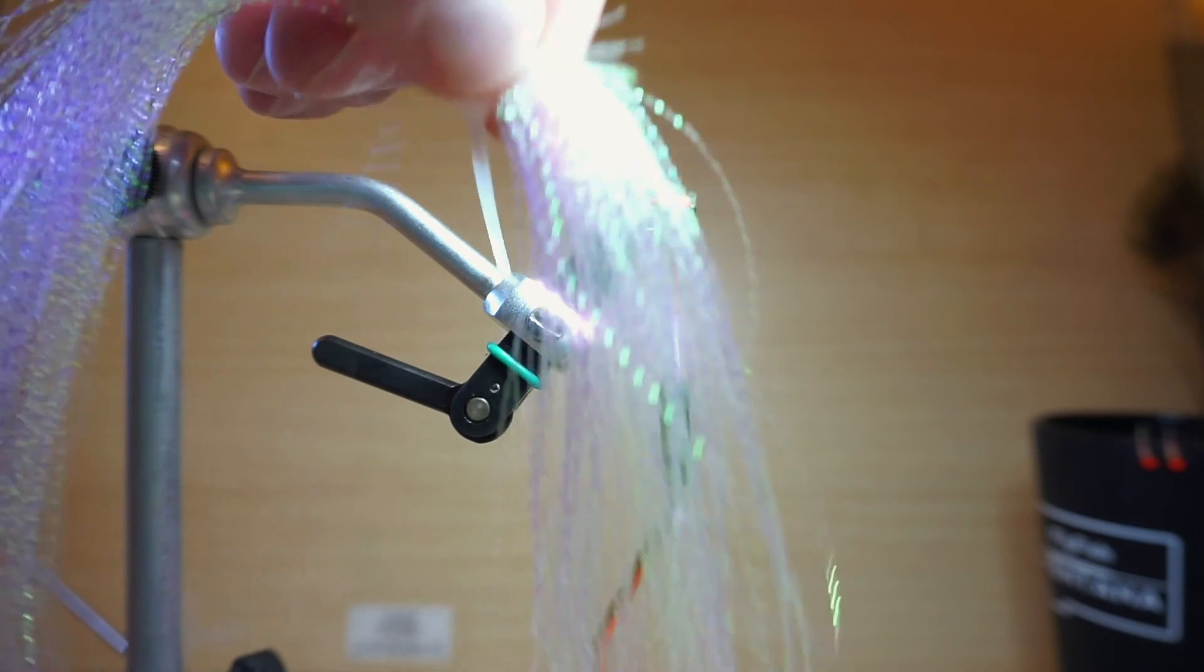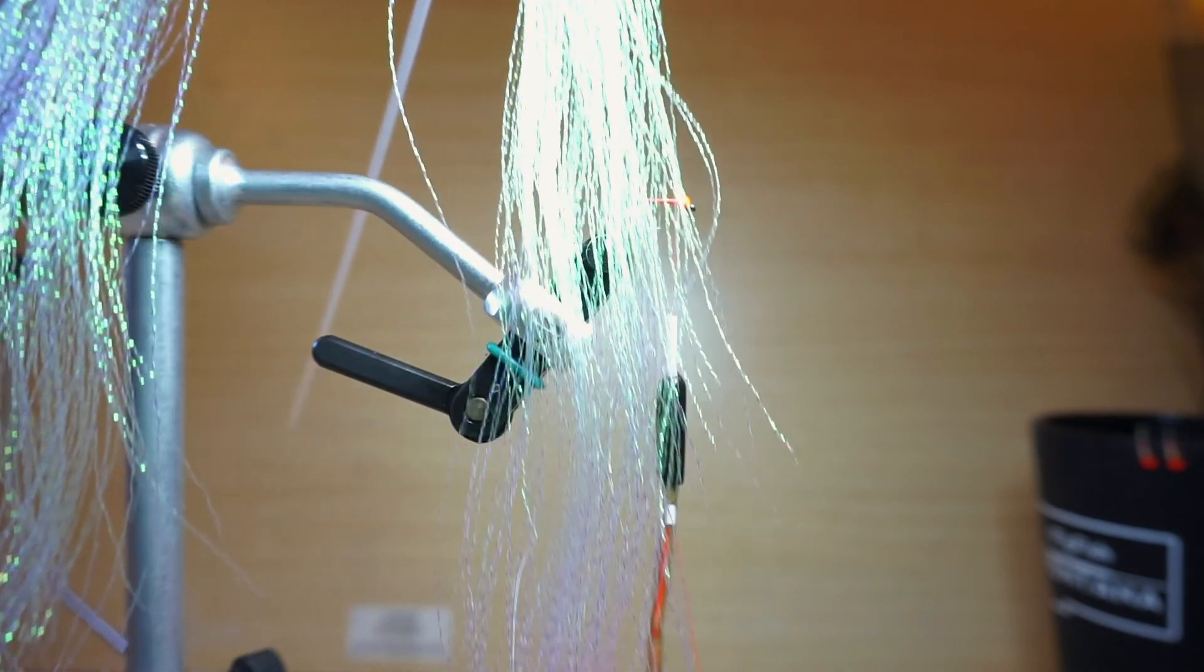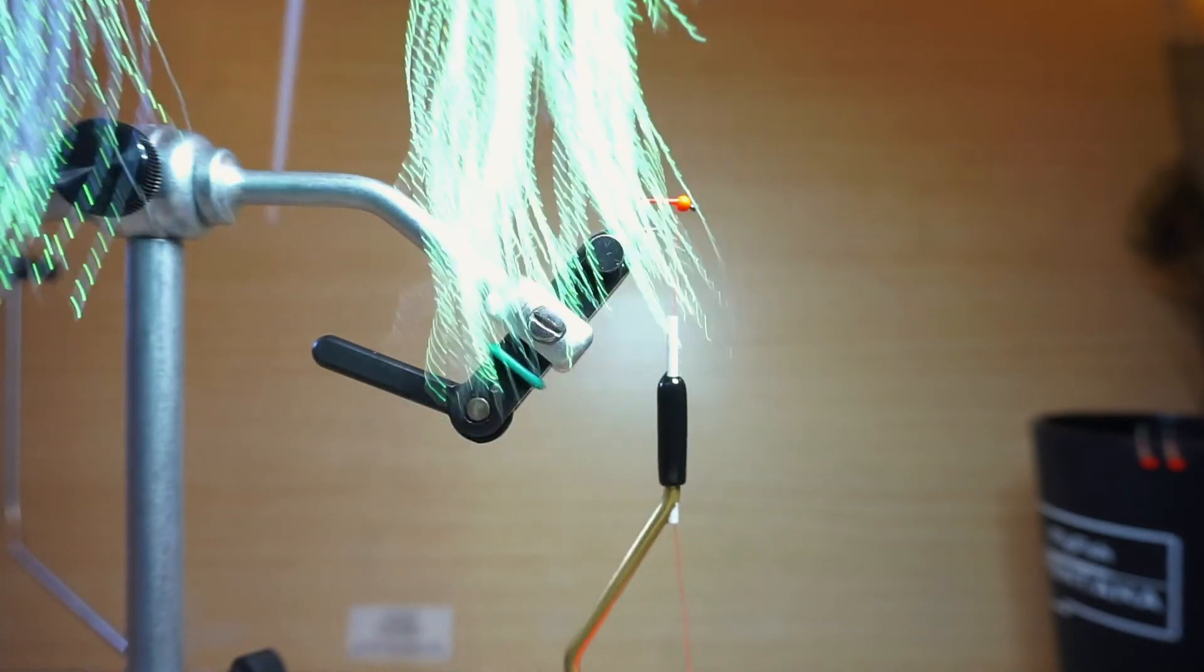And the first material we're going to use is this pearl crystal flash. I'm definitely not using all traditional materials here for this Rainbow Warrior and for me that's half the fun, tweaking things and making them my own. So feel free to use what you think is going to be best.